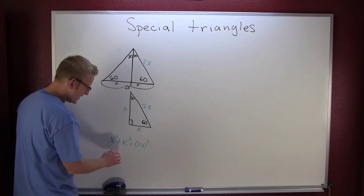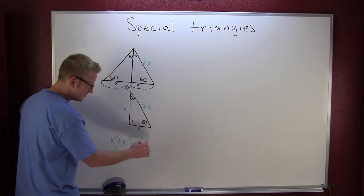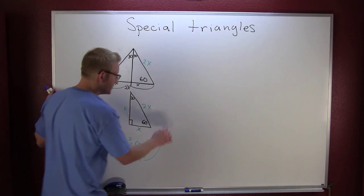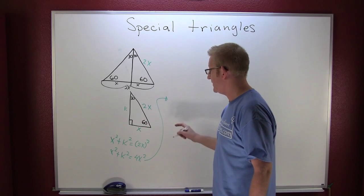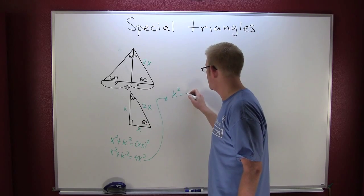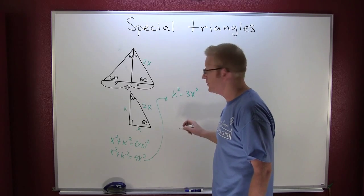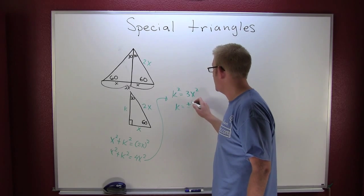So this is x squared plus k squared equals 4x squared. If I bring that over here then I have, subtracting an x squared off each side, k squared is 3x squared.